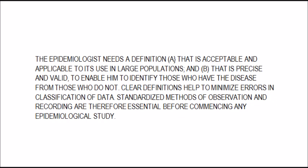The epidemiologist needs a definition that is: Number A, acceptable and applicable to its use in large populations; and Number B, precise and valid, to enable him to identify those who have the disease from those who do not. Clear definition helps to minimize errors in classification of data.